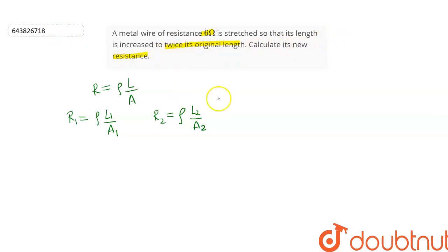It is said that the length is increased to twice by stretching, so L₂ = 2L₁. And as the wire is stretched, the area of cross-section will be halved because on stretching the length increases and the area decreases. So A₂ = A₁/2.